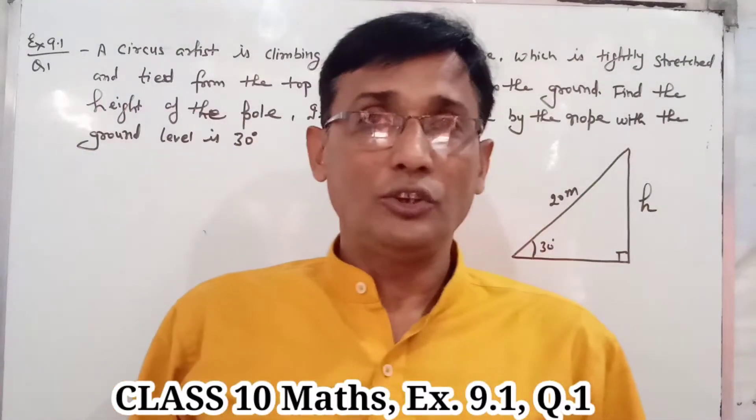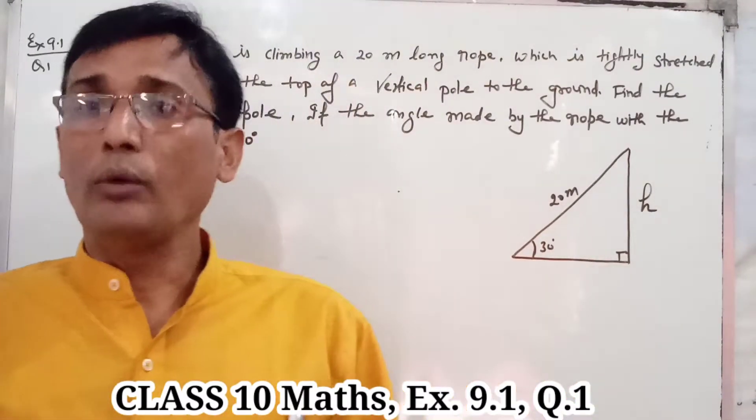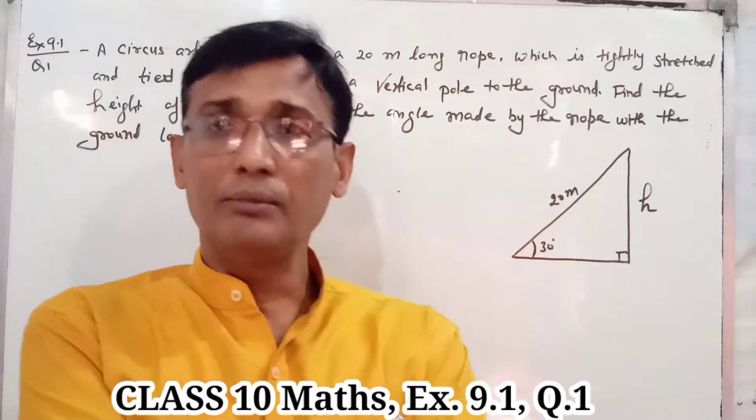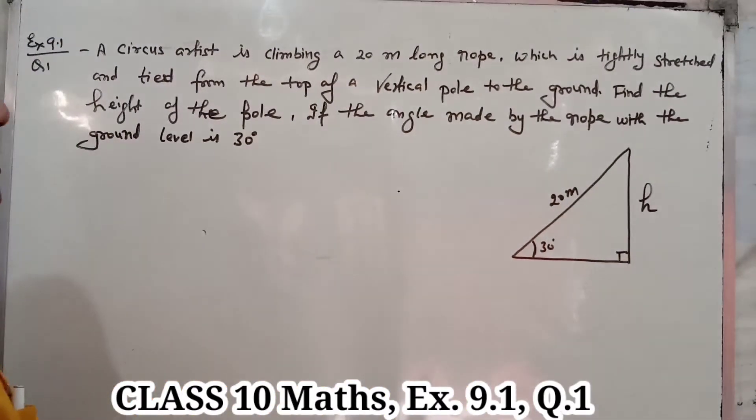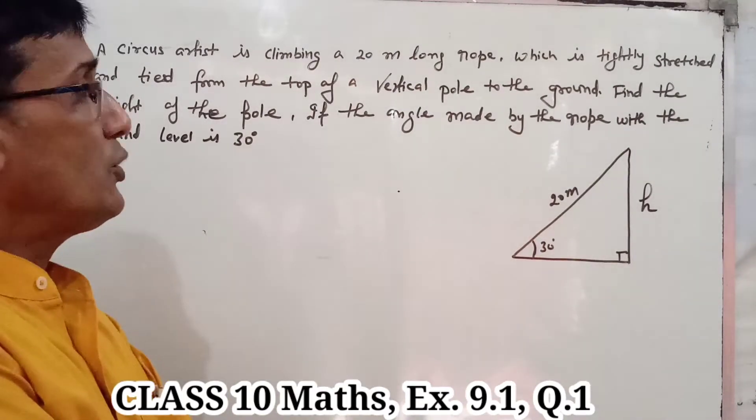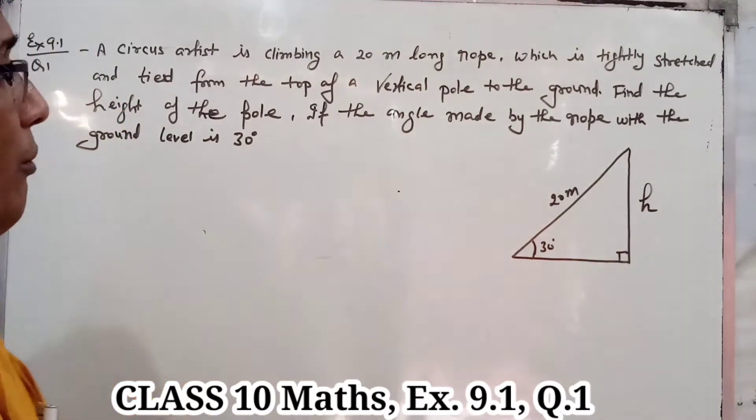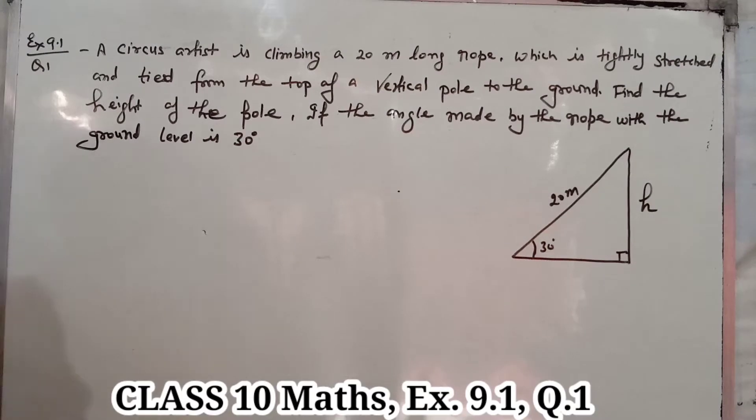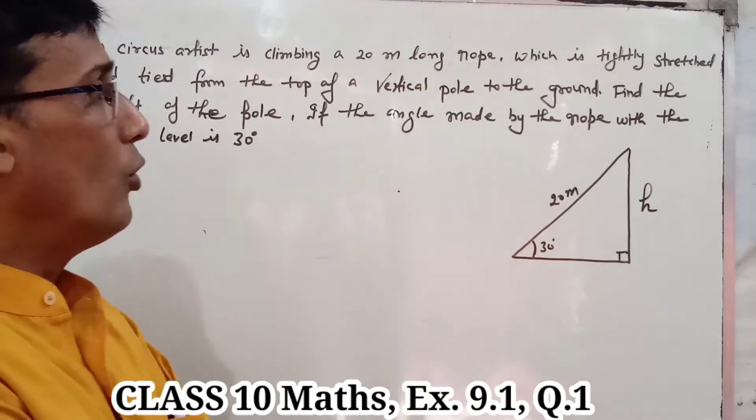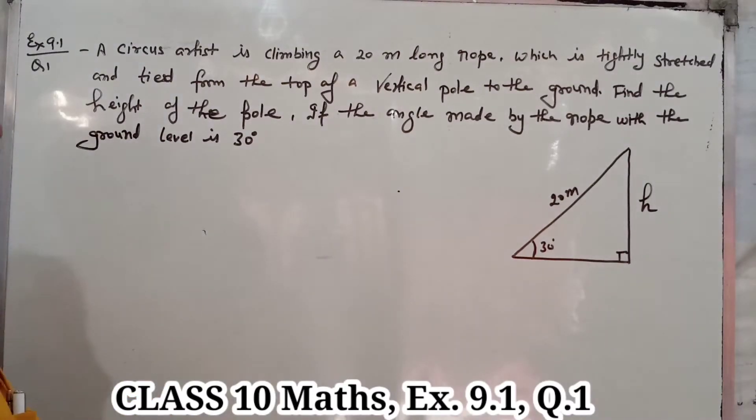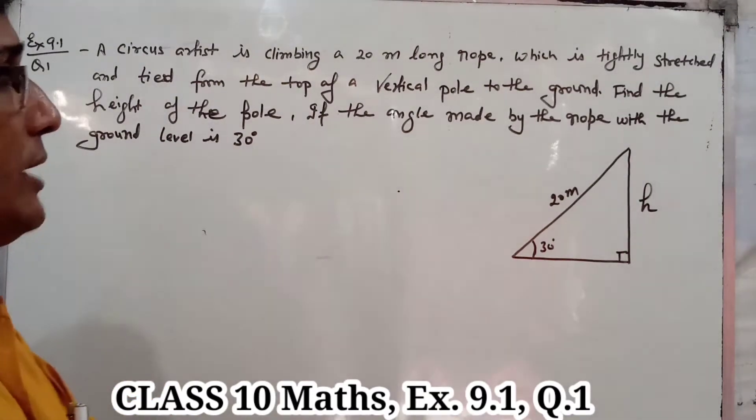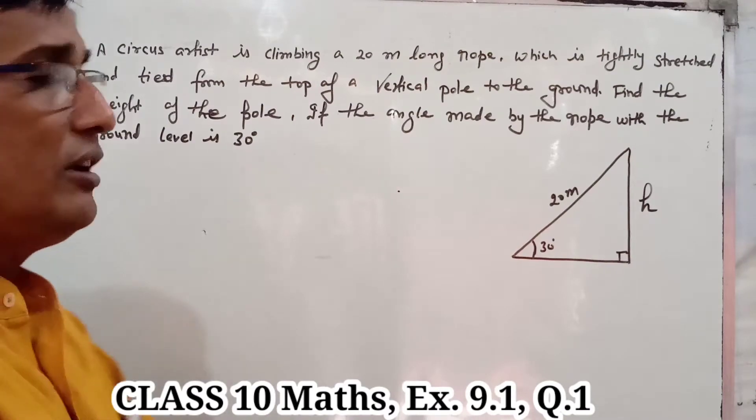Namaskar students. Exercise 9.1, question number 1: A circus artist is climbing a 20 meter long rope, which is tightly stretched and tied from the top of a vertical pole to the ground. Find the height of the pole if the angle made by the rope with the ground level is 30 degrees.